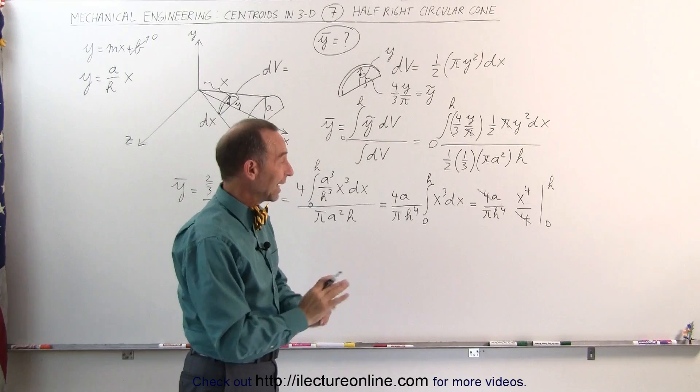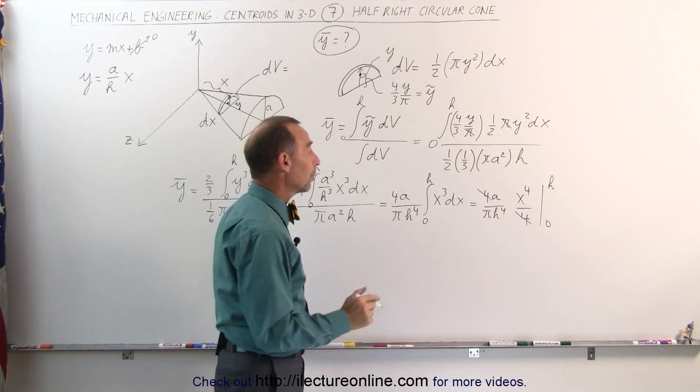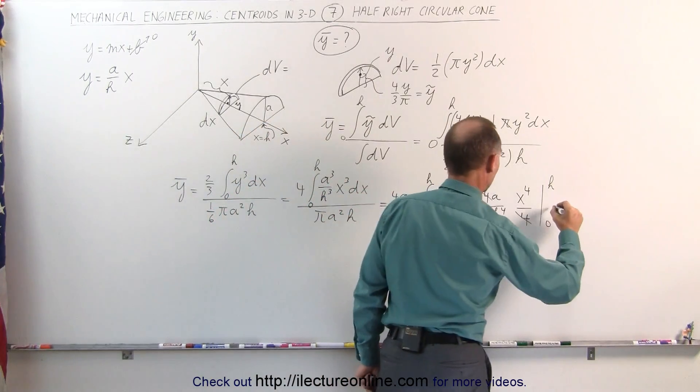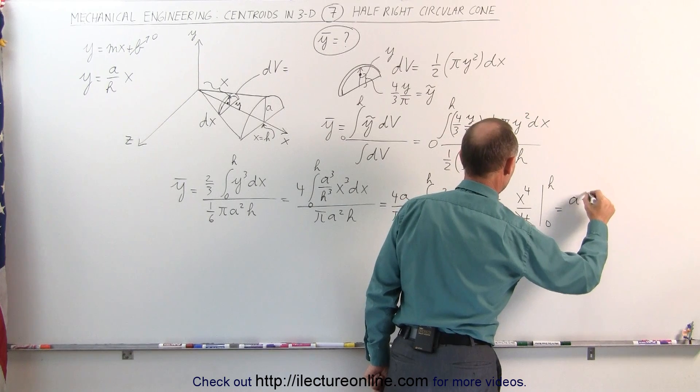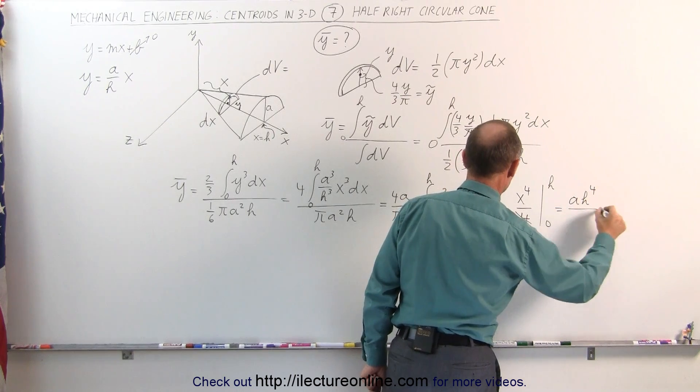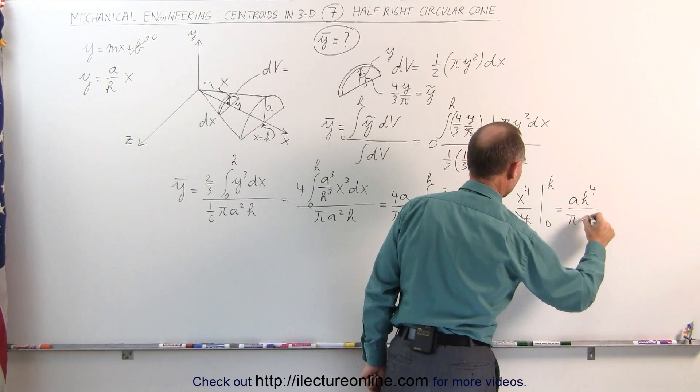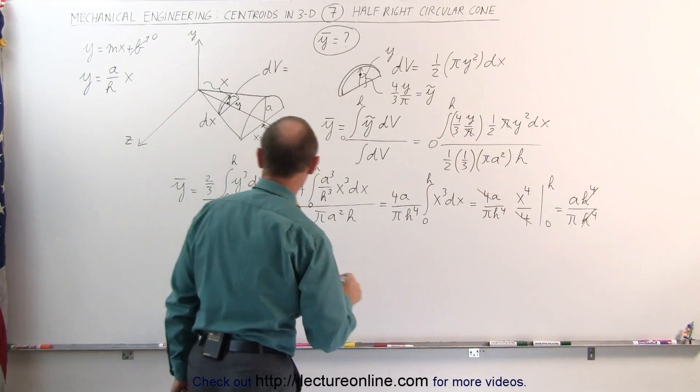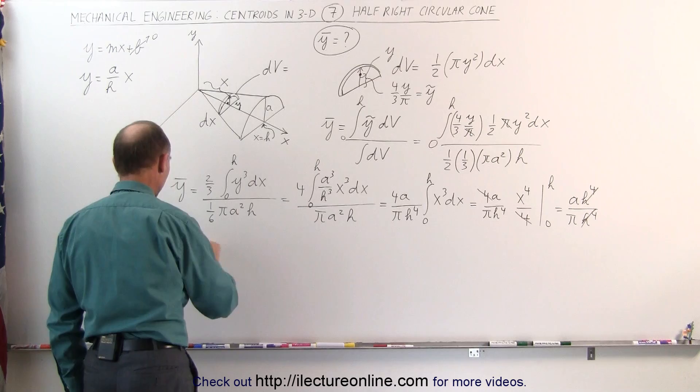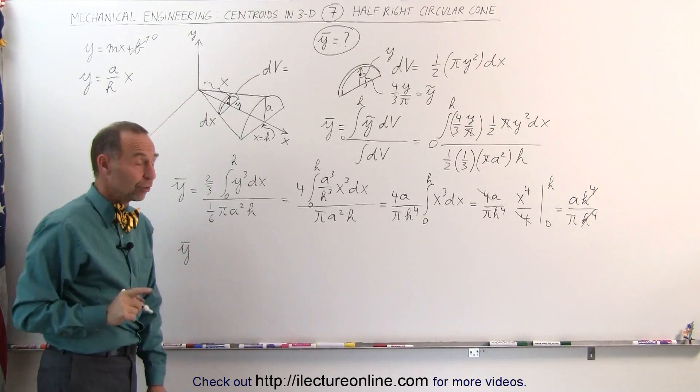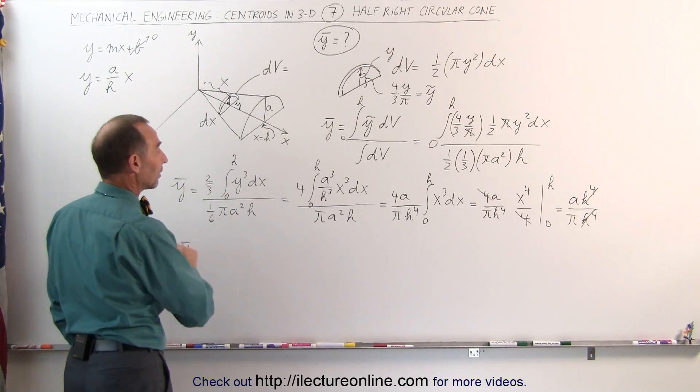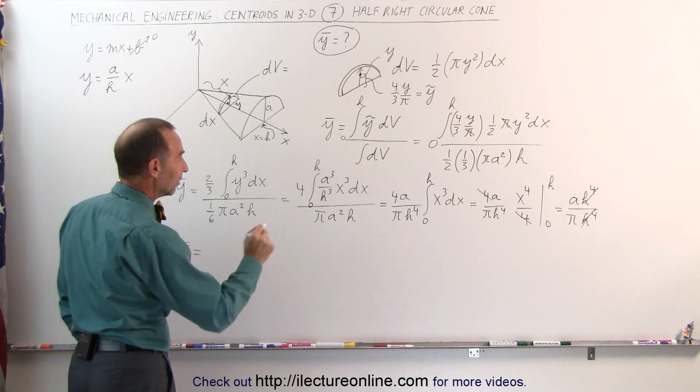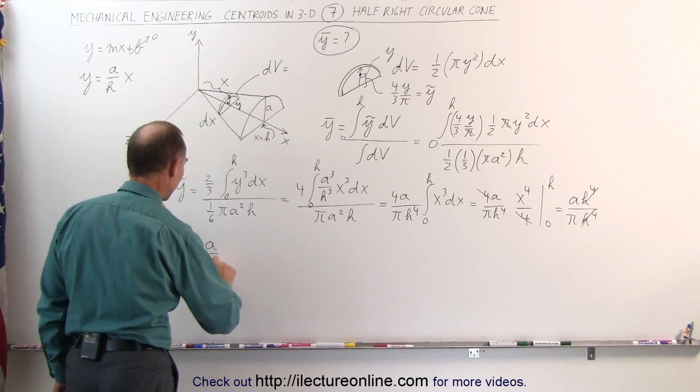And of course, when we plug in zero, we get nothing, so we don't need to bother with that. But when we plug in the h, this becomes a times h to the fourth power divided by pi times h to the fourth power. And the h to the fourth powers cancel out. And finally, we realize that the y coordinate of a half right circular cone for the centroid of that half right circular cone is equal to a divided by pi.